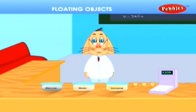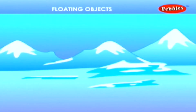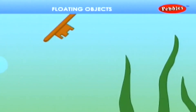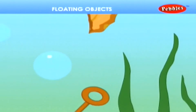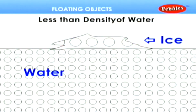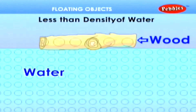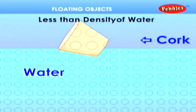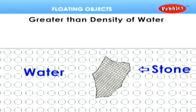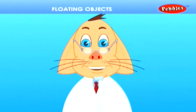Floating objects. You must have observed that certain objects like ice, cork, and wood float in water, but certain objects like iron and stone sink in water. Only those objects float in water whose density is less than that of water. If the density of an object is greater than that of water, the object sinks. For example, iron. The upward push of water on a floating object is called upthrust or buoyant force.